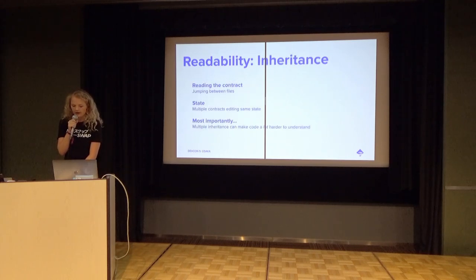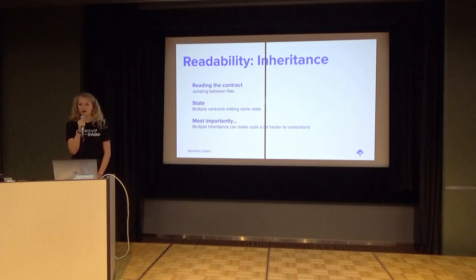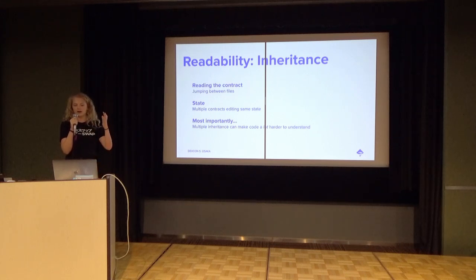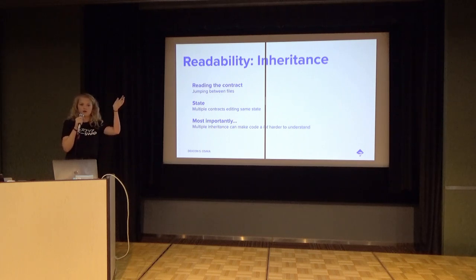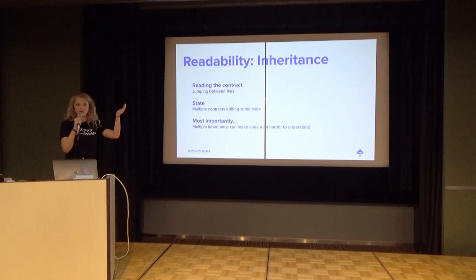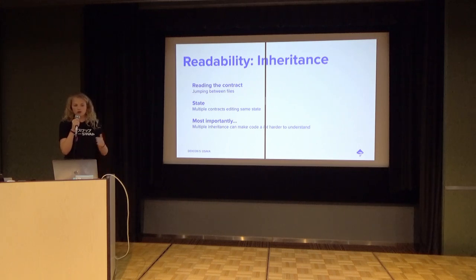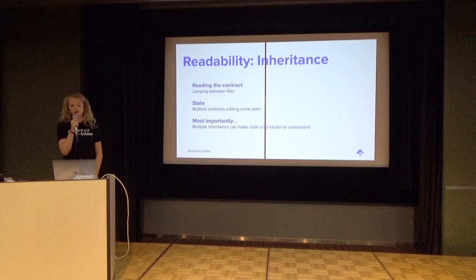When we bring in inheritance, to read one smart contract you have to jump between all the ones it inherits. You're trying to understand one, it references a variable you can't see in the one you're looking at. You then have to jump over to another contract, see that variable, see how it's been set up — and so you jump back and forth between all the files, making it a lot more complex.